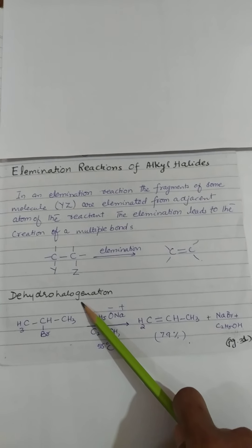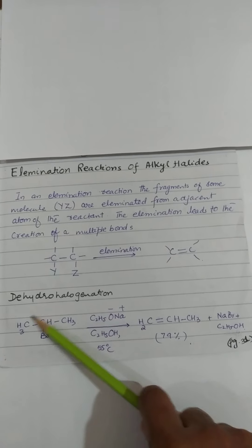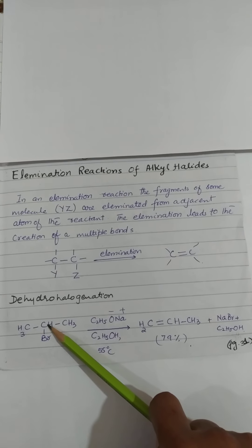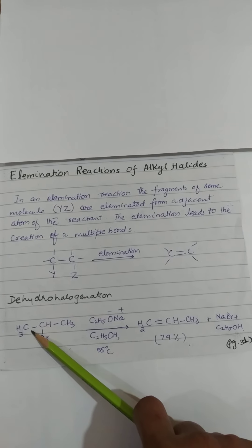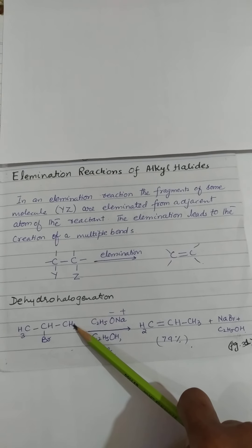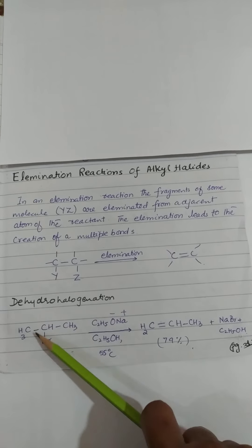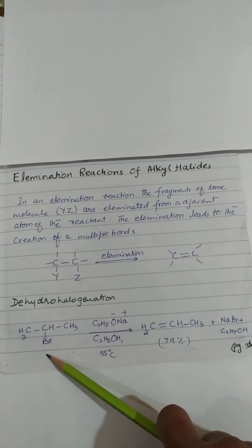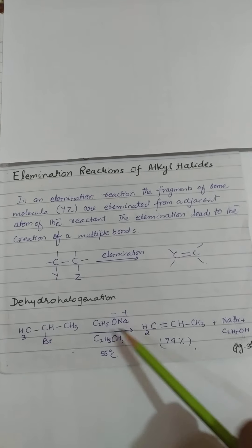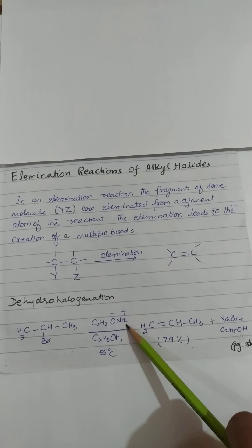اس کی example ہم اس طرح سے لے سکتے ہیں کہ یہاں پہ ایک molecule آپ کو دیا ہوا ہے۔ اس میں یہ alpha carbon ہے اور یہ beta carbon ہے۔ ان دونوں position سے کیونکہ یہاں molecule میں symmetry موجود ہے۔ Sodium methoxide جو کہ ایک base ہے، وہ استعمال ہو رہا ہے۔